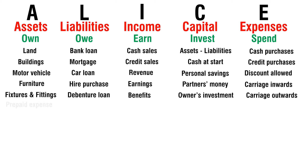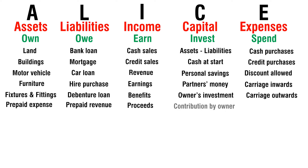Carriage outwards — spend. Prepaid expense — own. Prepaid revenue — owe. Proceeds — earn. Contribution by owner — invest. Returns inwards — spend. Stock — own. Accrued expense — owe.